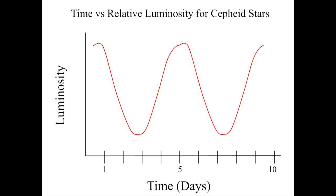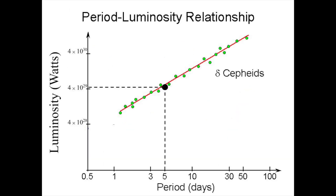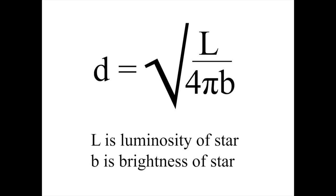For example, this Cepheid has a period of about 5 days. Therefore, we can determine its peak luminosity is about 4 times 10 to the 29 watts. Using the brightness of the Cepheid on Earth and the known peak luminosity, Hubble calculated the distances to the Cepheid and their galaxies.